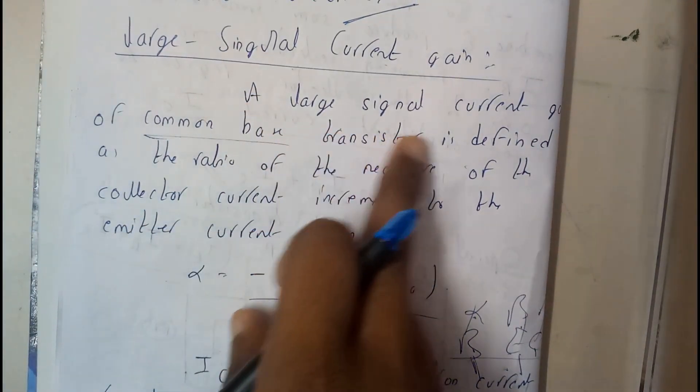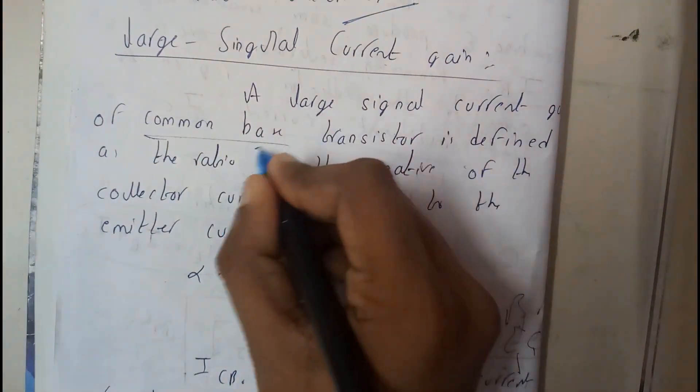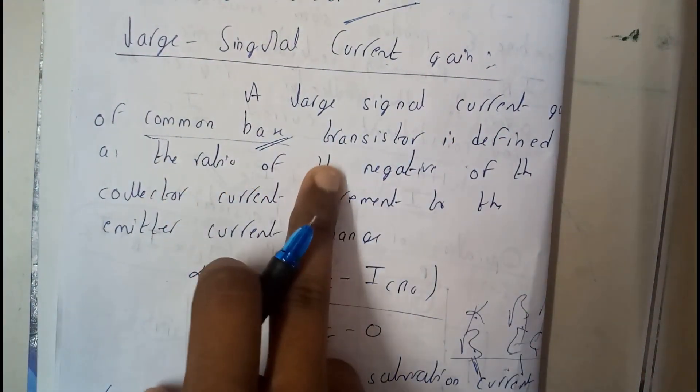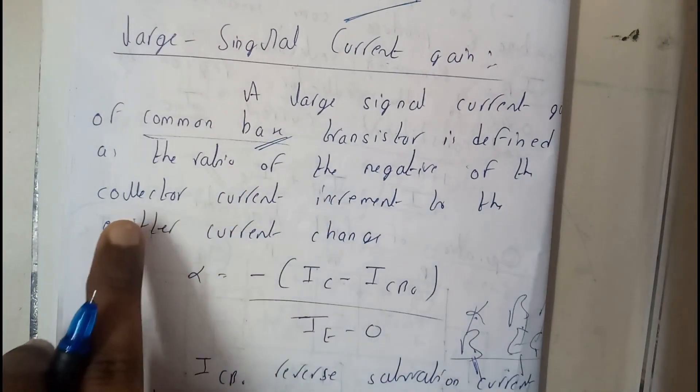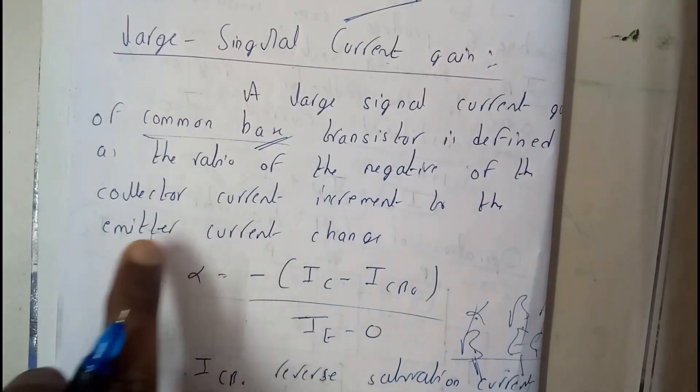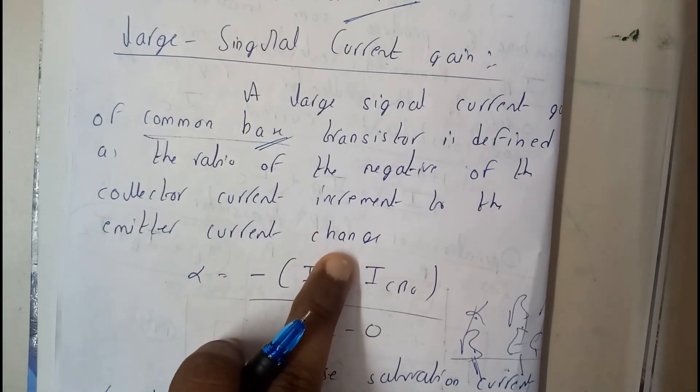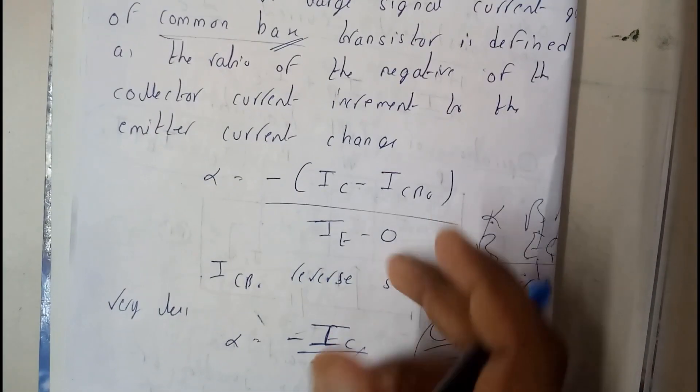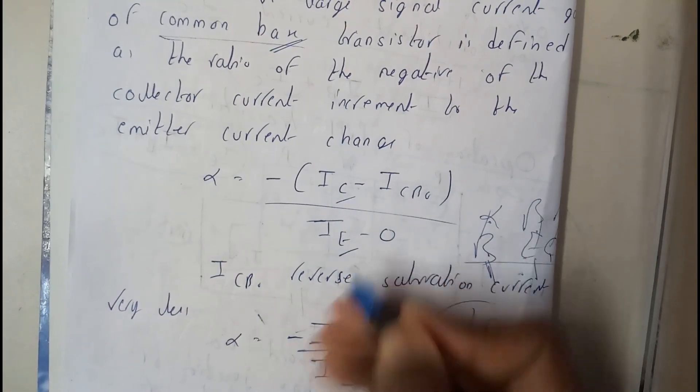Basically, a large signal current gain of a common base transistor is defined as the ratio of negative of the collector current increment to the emitter current change. So it is just the difference of that, that is nothing but the collector by emitter guys, that's it.